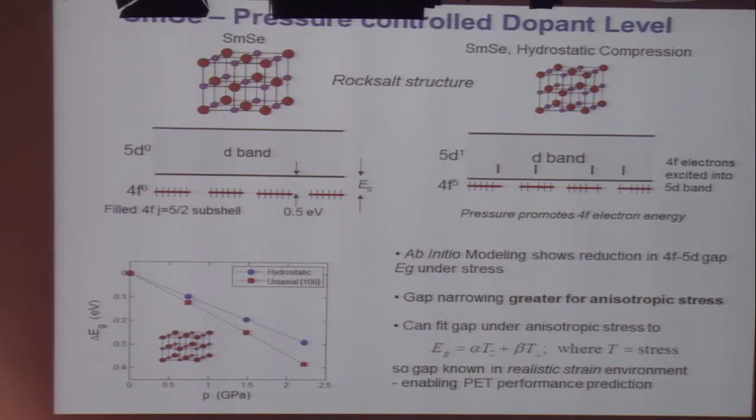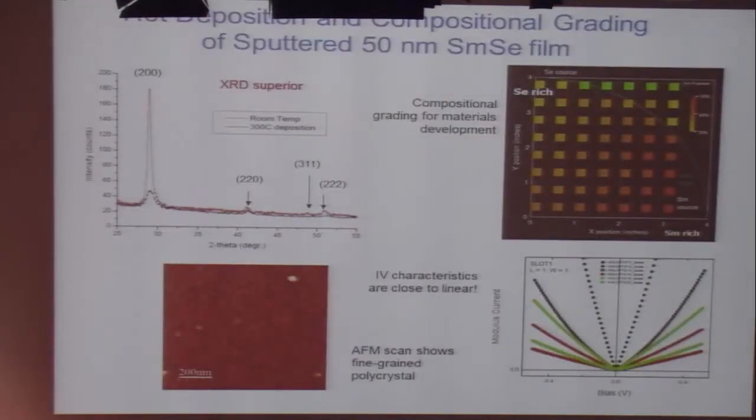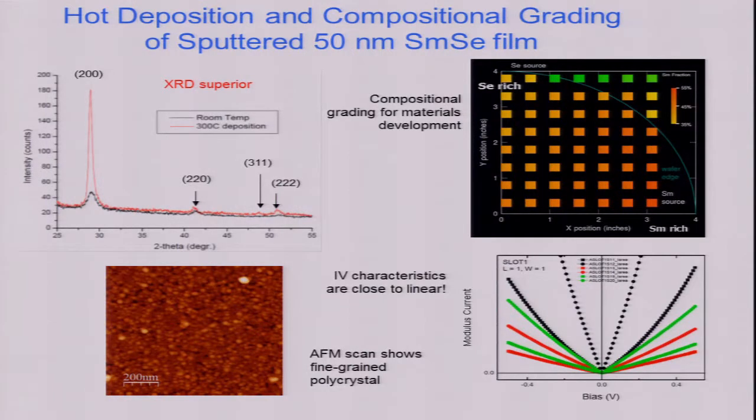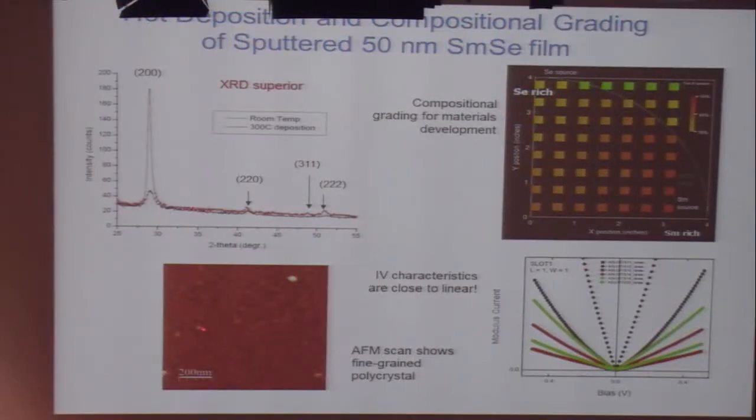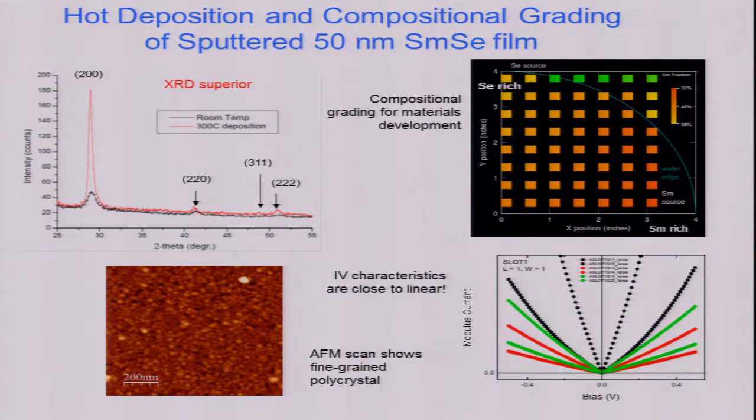This shows calculations of the gap narrowing versus pressure which are pretty consistent with the data. Experimentally, we have sputtered some of these samarium selenide films, typically 50 nanometers thick down to 8, and the hot sputtering gave much better X-ray results. The films are polycrystalline. We use graded composition to select ideal samples and we can achieve ohmic behavior and this is what we want. The output resistance is ohmic in this device.